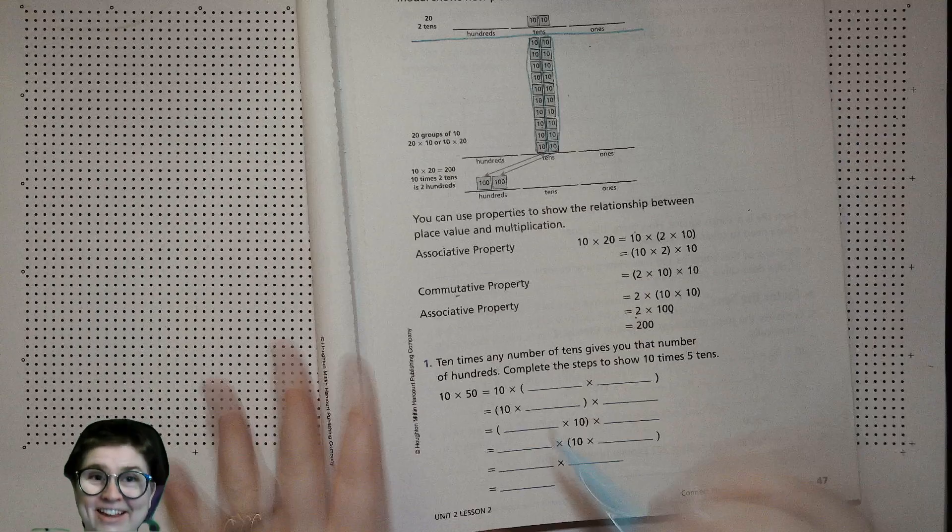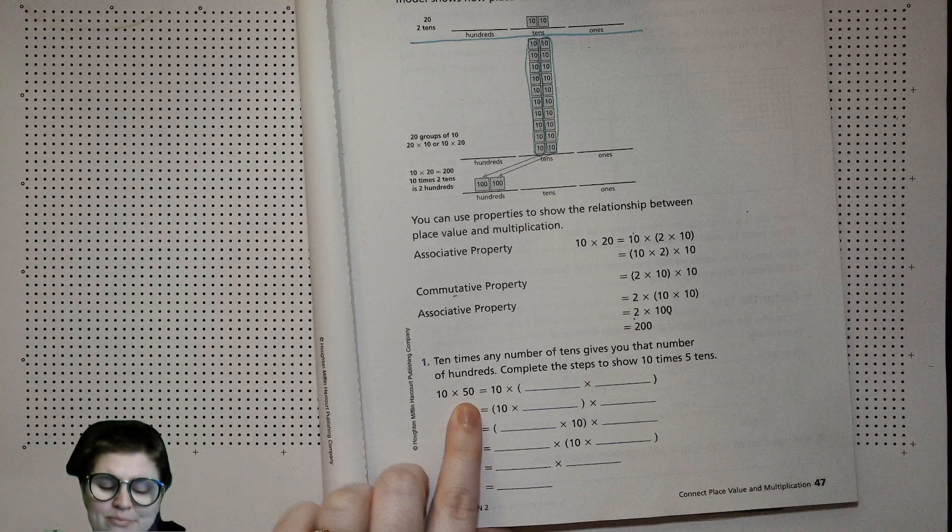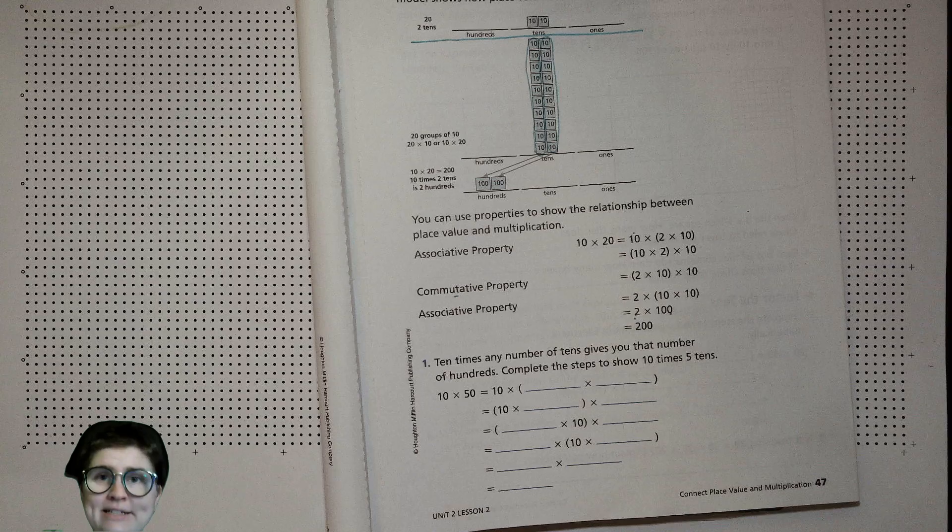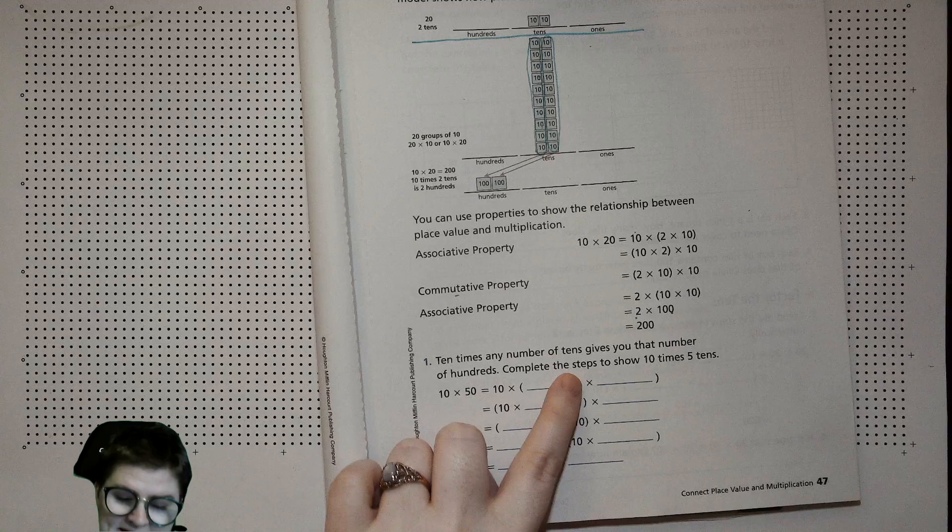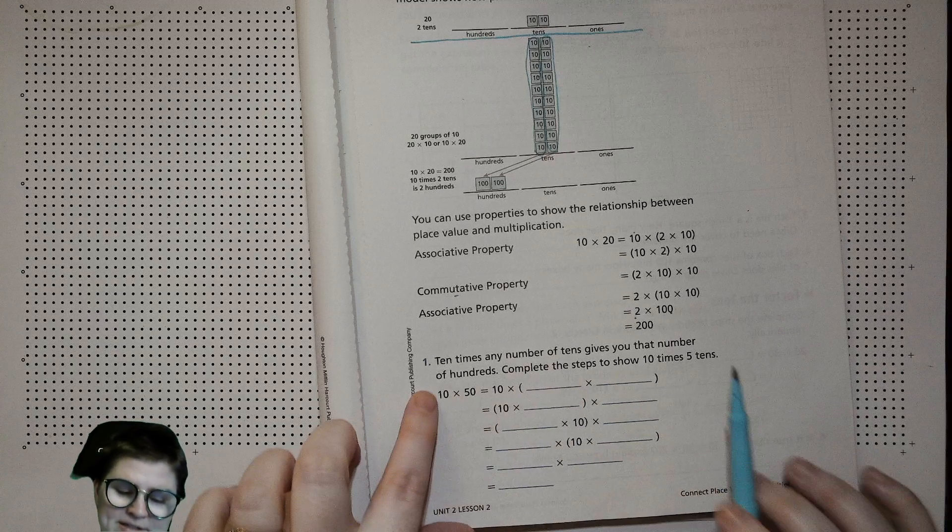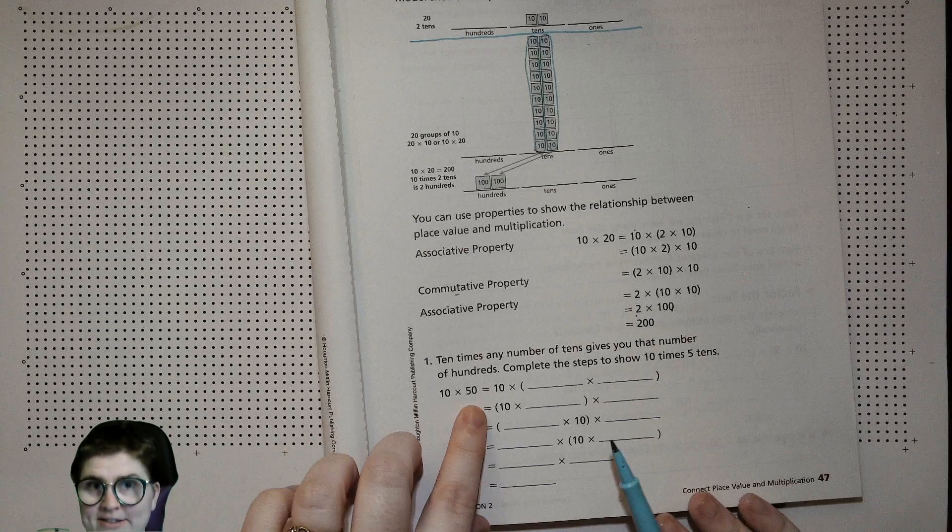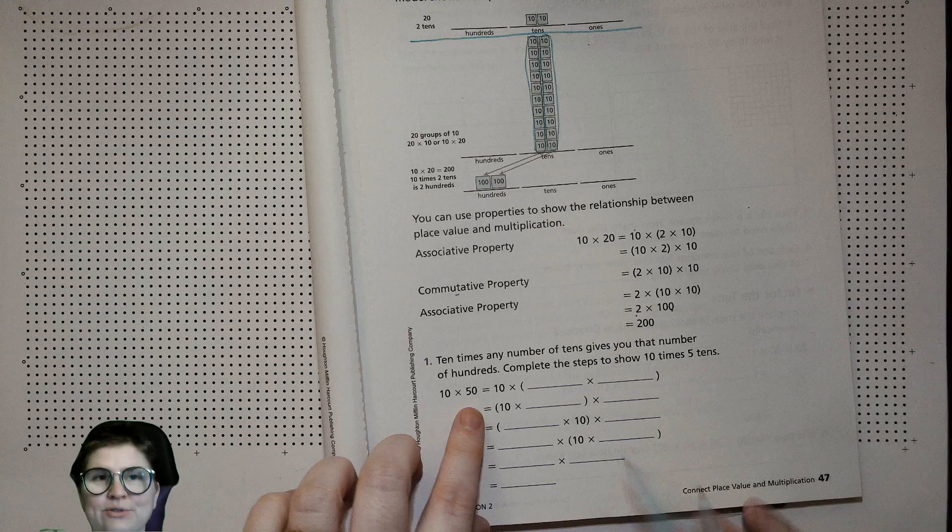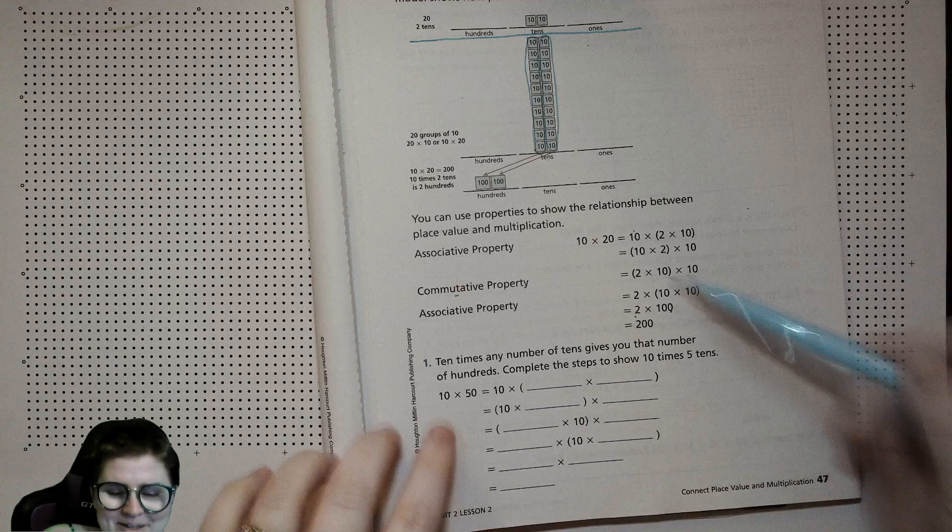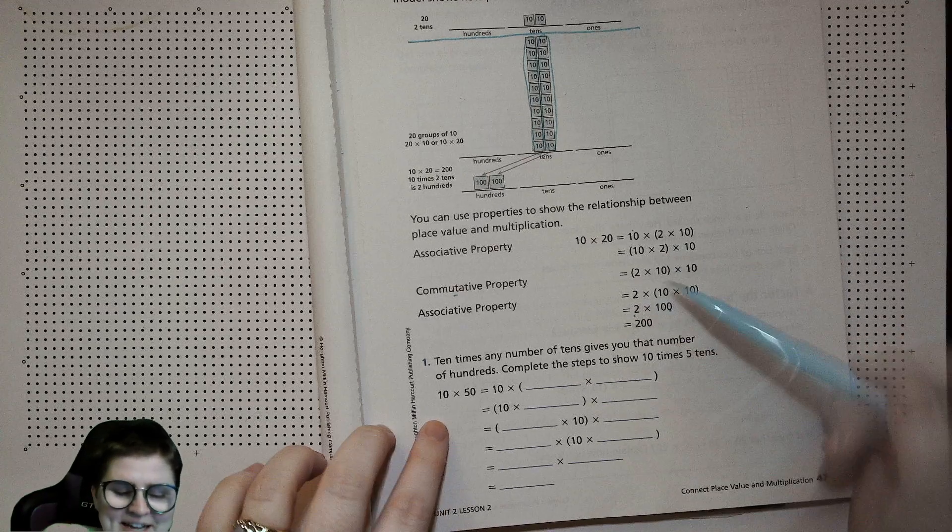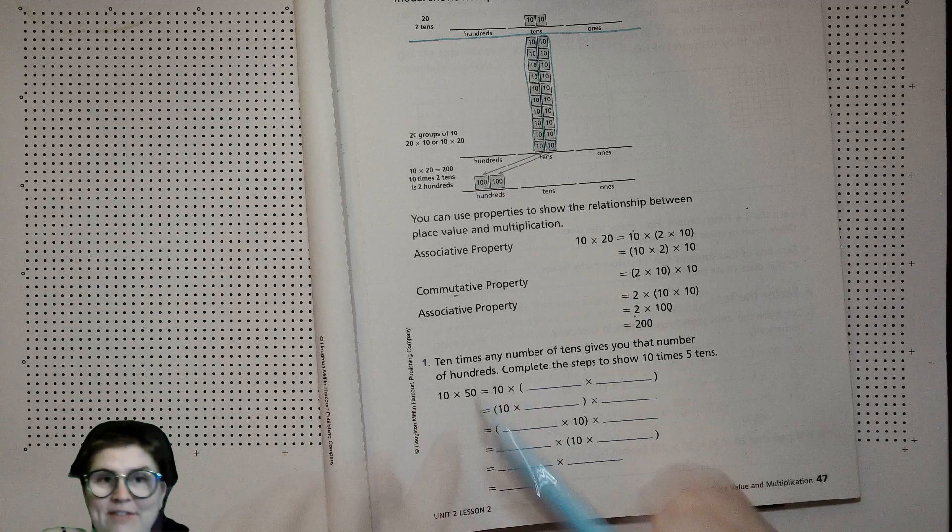So we're gonna try that now with a different multiple of 10, which is 50. You can use this: 10 times any number of tens gives you that number of hundreds. Here you have 5 tens, and you're going to push the 5 aside for a moment, have the 10 multiply with the 10, and then it's 100, and then you just have that number of hundreds.